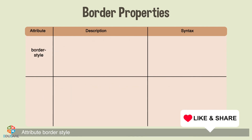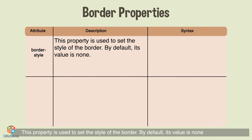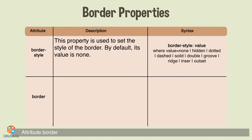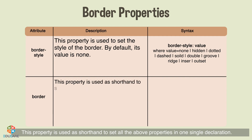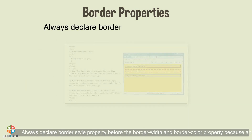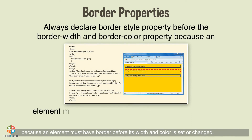The border-style property sets the style of the border; by default its value is none. Values can be none, hidden, dotted, dashed, solid, double, groove, ridge, inset, or outset. The border shorthand property sets all border properties in one single declaration. Always declare the border-style property before border-width and border-color, because an element must have a border before its width and color can be set or changed.